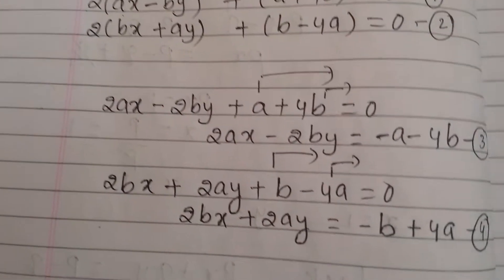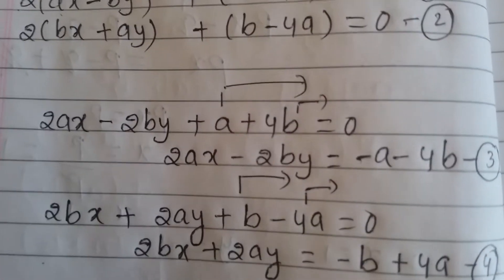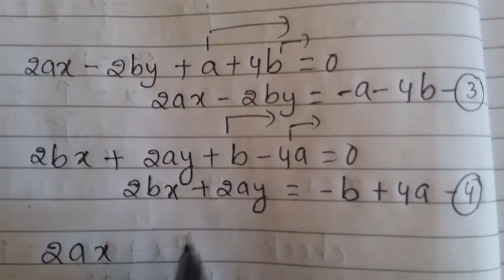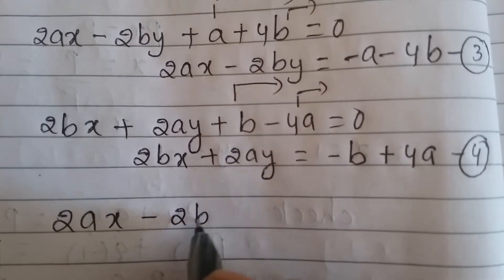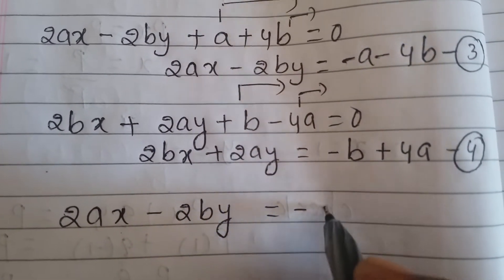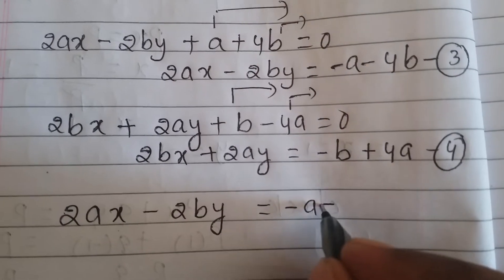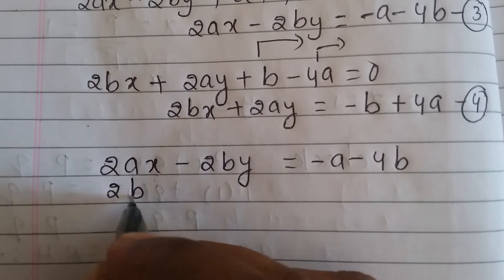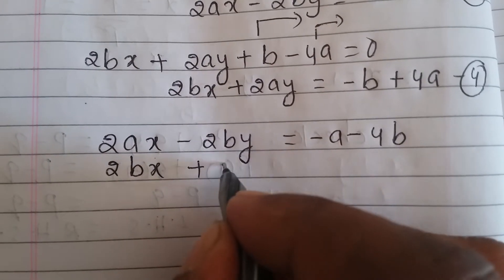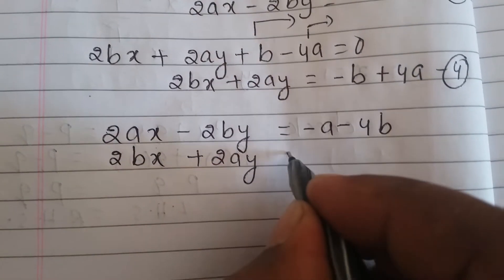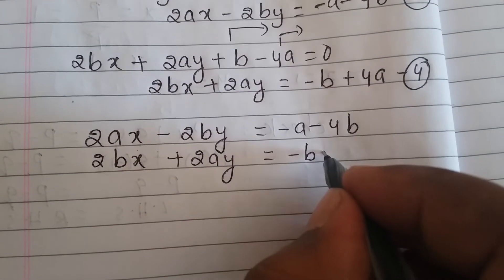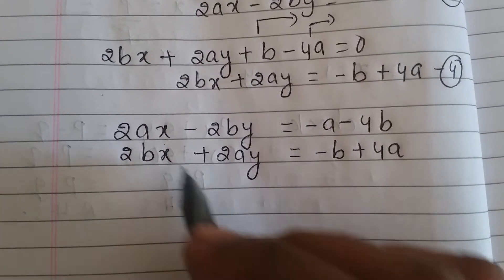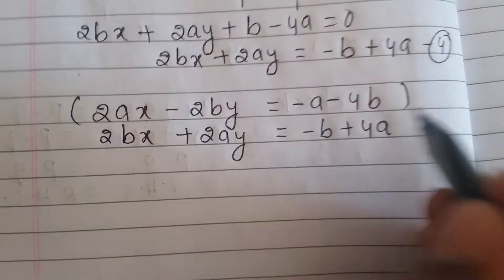So now we solve equation number three and equation number four. Equation number three is: 2ax minus 2by equal to minus a minus 4b. Equation number four is: 2bx plus 2ay equal to minus b plus 4a.